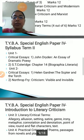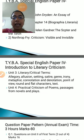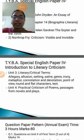In unit number three there would be literary and critical terms, particularly: allegory, allusion, setting, satire, genre, irony, metaphor, connotation and denotation, point of view, round and flat characters, and text.